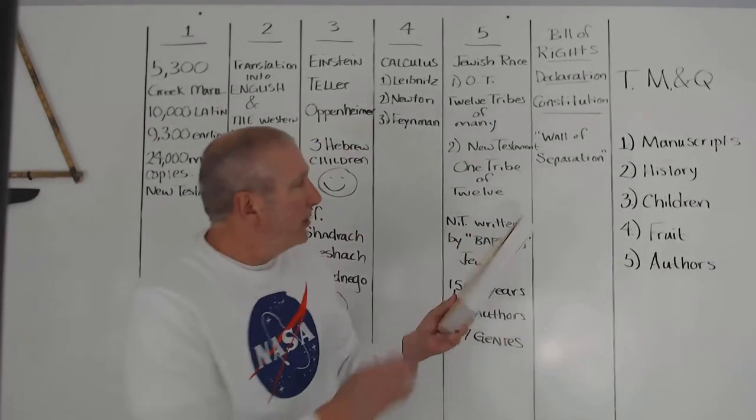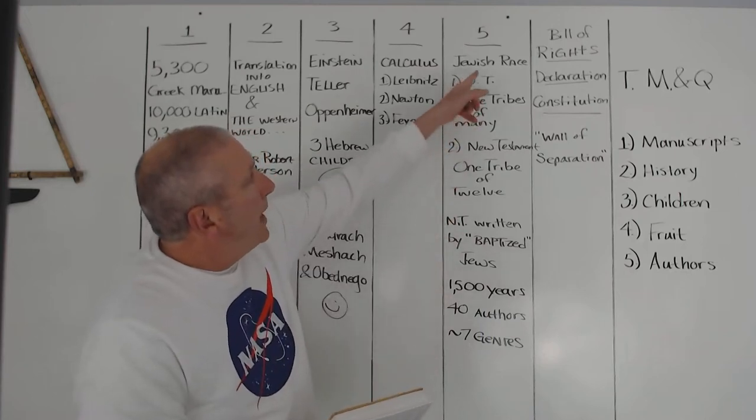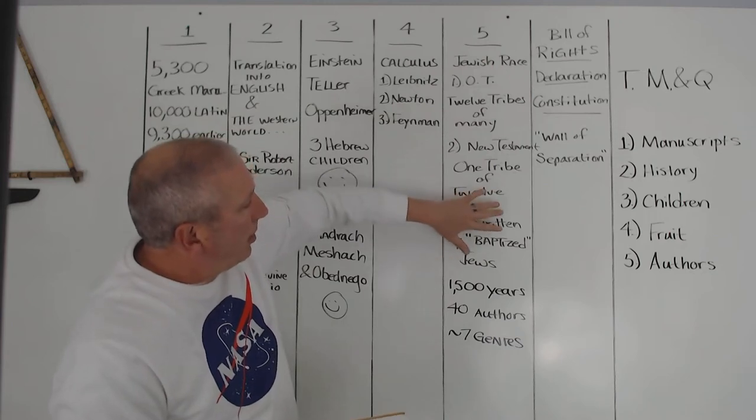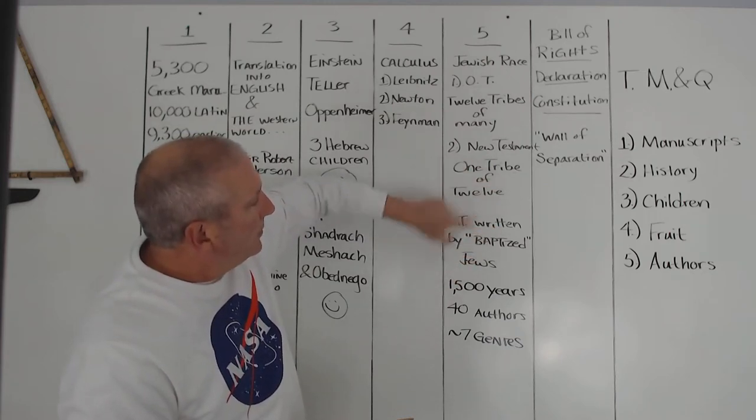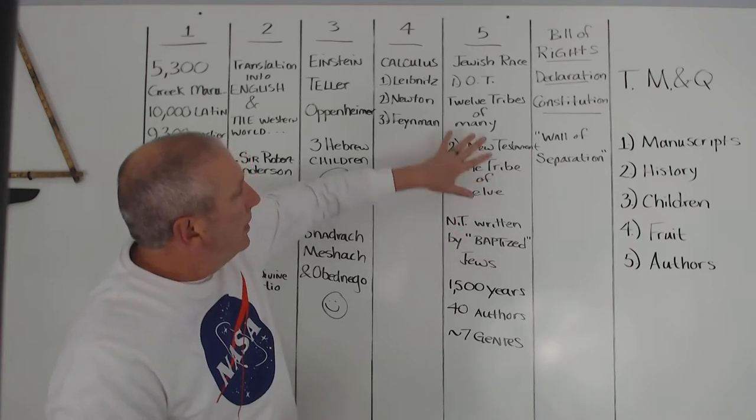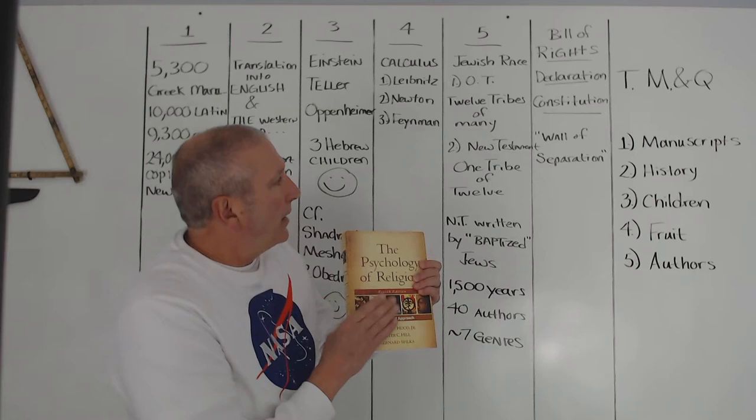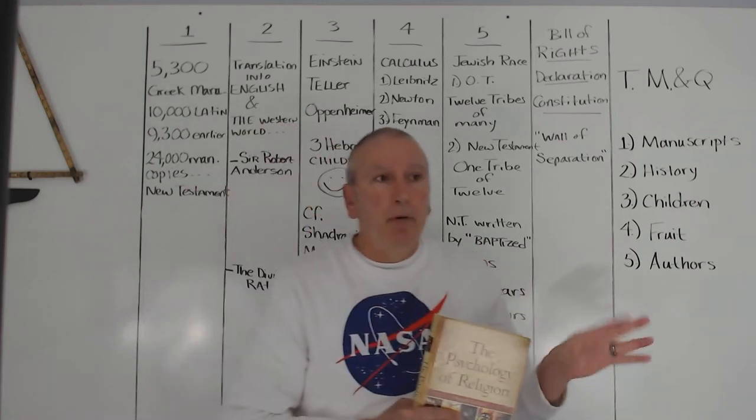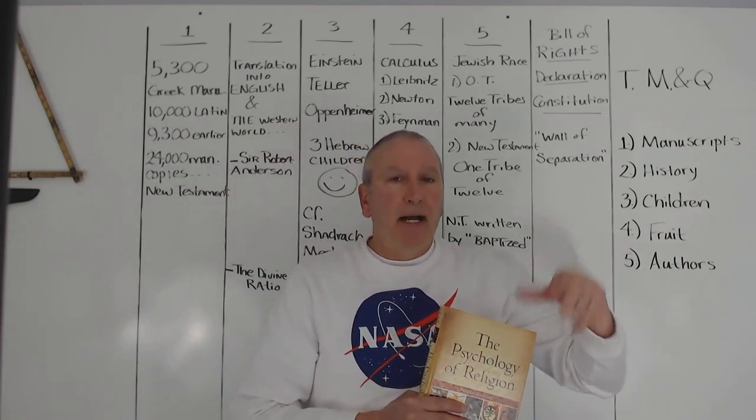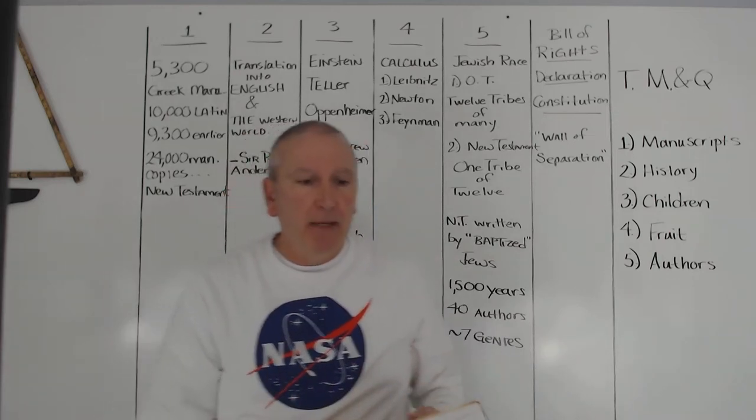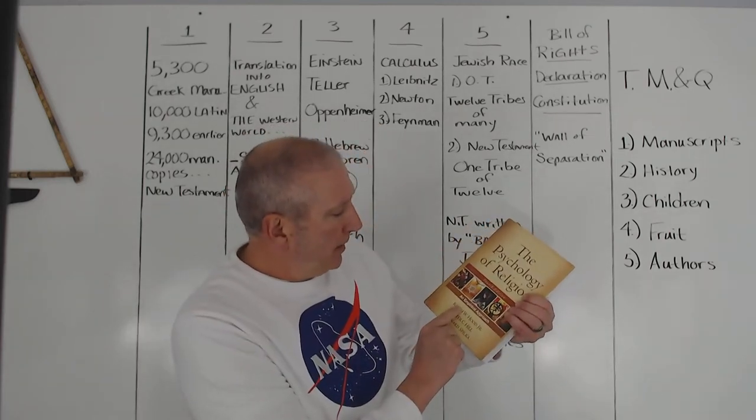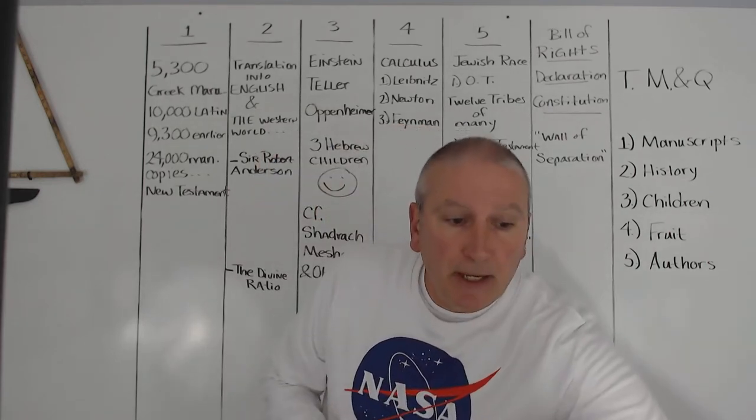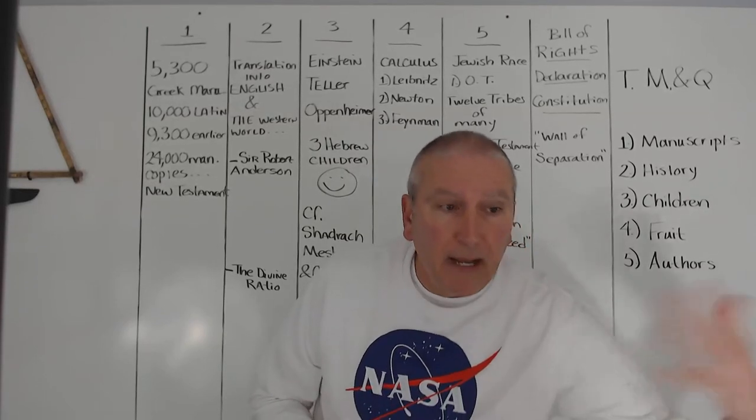So according to research, psychology of religion, the Jewish race, and yes, there is such a thing as a race of people. These people, according to this famous Albright, the famous archaeologist, said the New Testament was written by baptized Jews. This race of people, according to psychological research, scientific research, have been shown per 1,000 people to have more people with an IQ of greater than 140 than any other race of people. And you can read that in the psychology of religion and empirical approach. You can take this class at the University of Arkansas at Little Rock.